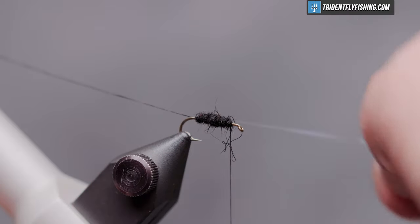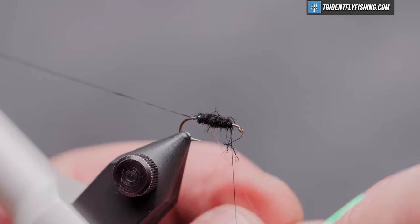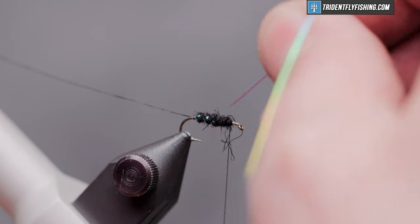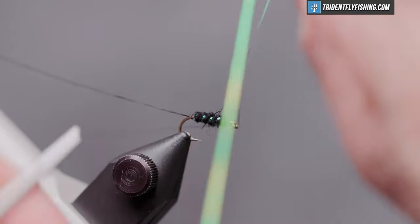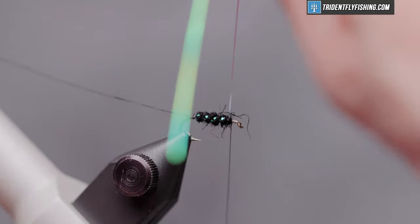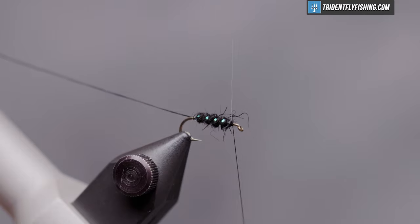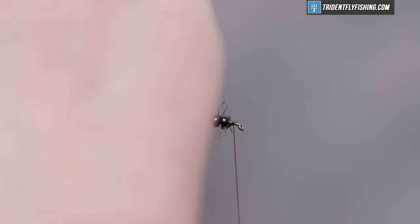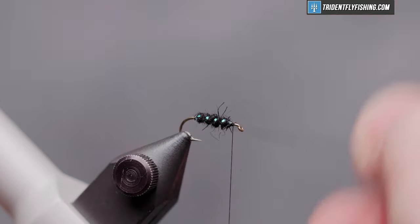And now we'll take our rib material and we'll make some open spiral turns up the body of the fly to add a little bit of flash to it. And cut that off. And now the counter rib. I'm going to wrap that in the opposite direction.